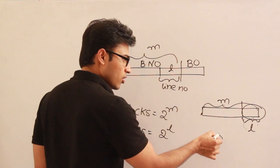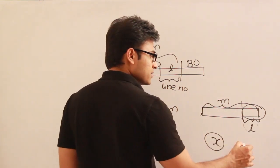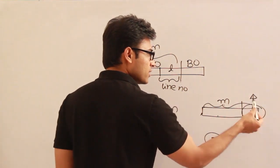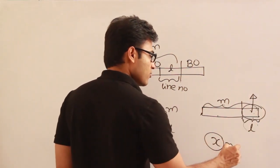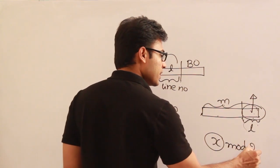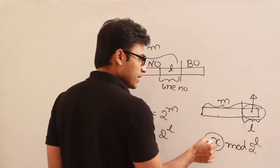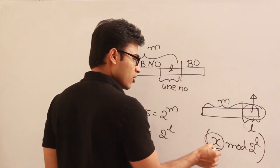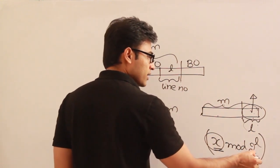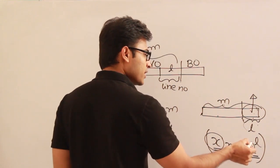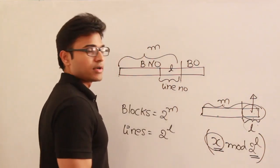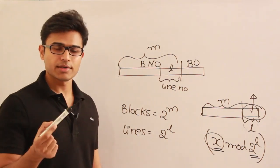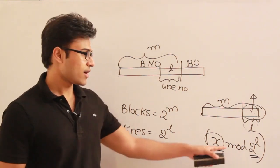So if x is the block number and the number of lines is 2 power l, then the line number in which this block will be present is x mod 2 power l. You take the main memory block number, divide it by 2 power l, and whatever remainder you get, that is the line number. From now on, to find where a block is present, you can directly compute the modulus.